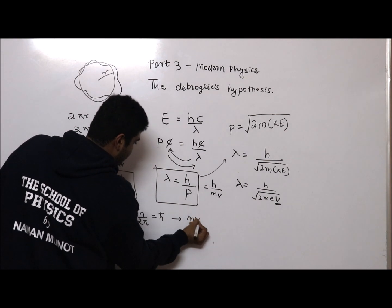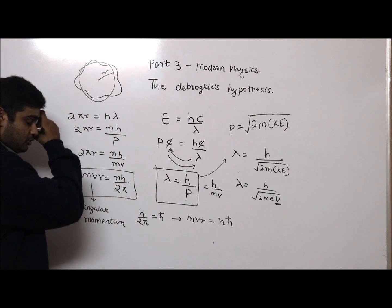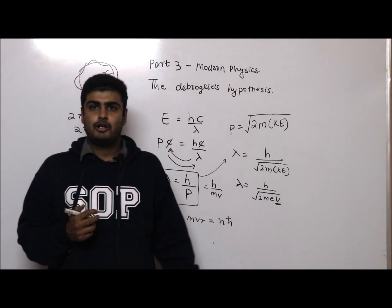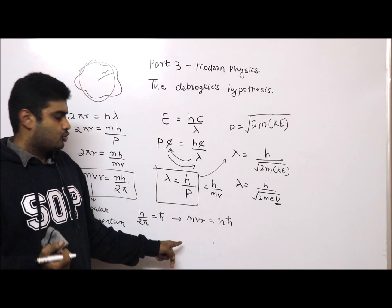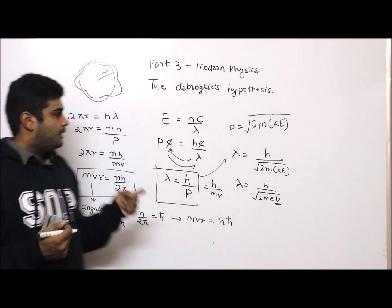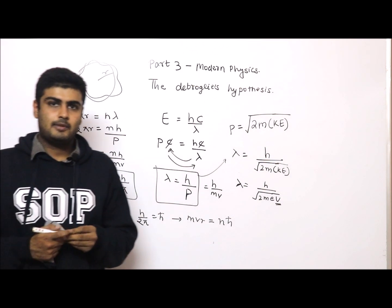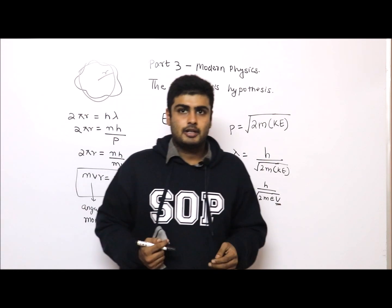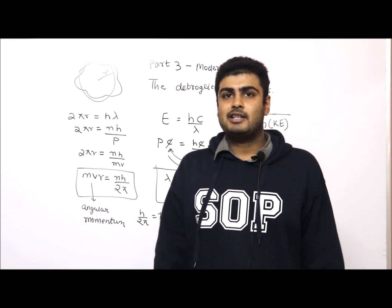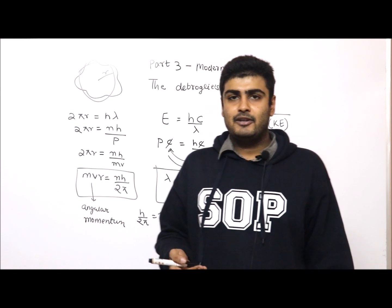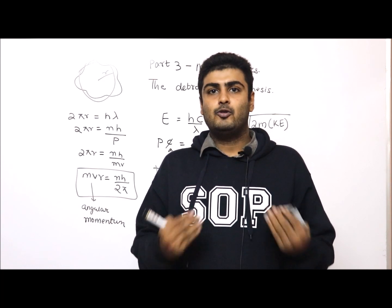We also write h/2π as ℏ (h-cross), so MVR = nℏ. Here h = 6.63 × 10⁻³⁴ joule-seconds. That multiple should be the angular momentum in any Bohr orbit. This was all about de Broglie's hypothesis. I hope you enjoyed this chapter. Please subscribe to my channel and keep revising so you can remember all the formulas and do well in exams.